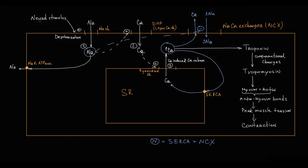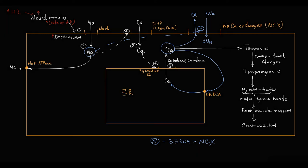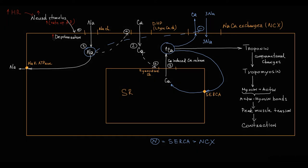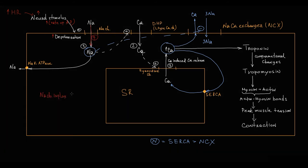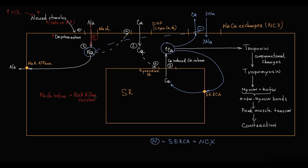The mechanism of the Bowditch phenomenon is as follows. With an increase in heart rate, the frequency of neural stimulation increases, meaning there is an increase in the rate of action potentials and frequency of depolarization. Because sodium enters the cell during each depolarization, increased depolarization frequency increases intracellular sodium concentration. The influx of sodium through sodium channels increases to such an extent that sodium-potassium ATPase cannot keep up, so increased heart rate causes increased cytosolic sodium.